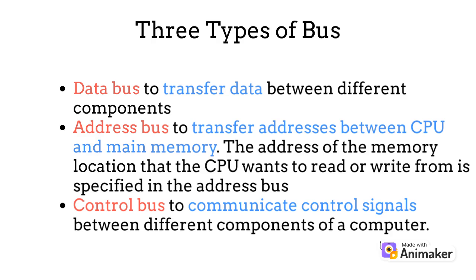Now let us understand about each of these buses in detail. Data bus is used to transfer data between different components. Address bus is used to transfer addresses between the CPU and main memory. The address of the memory location that the CPU wants to read or write from is specified in the address bus. Control bus is used to communicate control signals between different components of a computer.